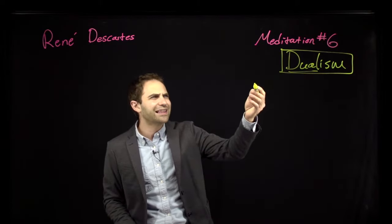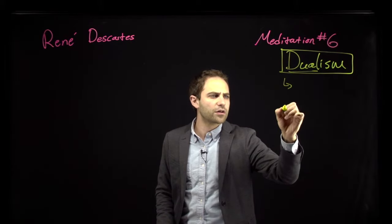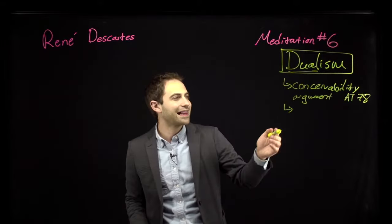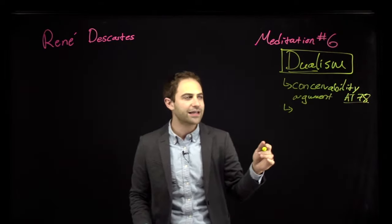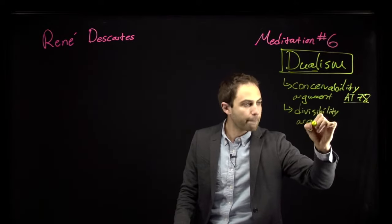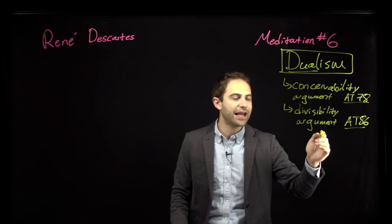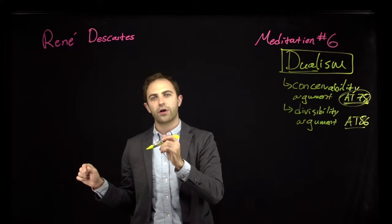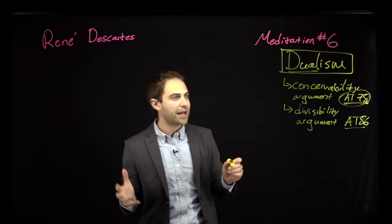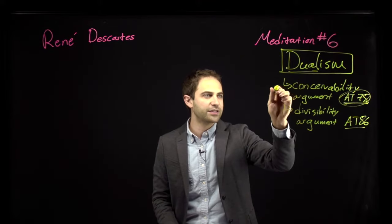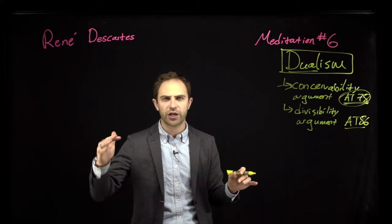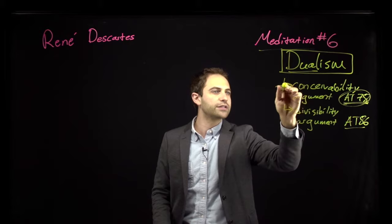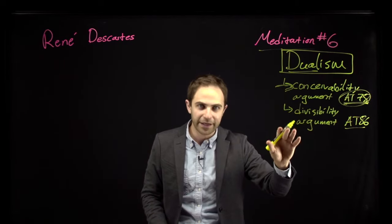The second thing that happens in Meditation 6 is we get two arguments for the claim that the mind and body are different things. One is the conceivability argument, which happens mostly on page 8078, and the other is the divisibility argument, which happens mostly on page 8086. Because this is an introduction to philosophy course, we won't cover the conceivability argument — it's a bit more complicated. The divisibility argument is enough to occupy us.